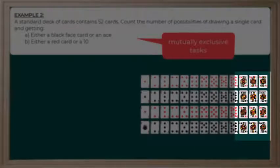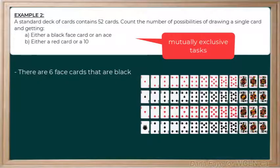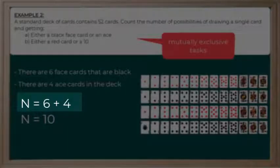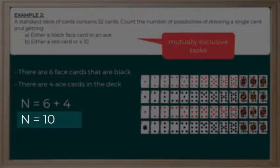Let's start by looking at the black face cards. In each suit in the deck, there are three face cards and half of the suits are black. Therefore, we can count six total black face cards. When we look at the aces, there is one ace per suit in the deck of cards, so in total there are four possibilities for aces. To find the number of possibilities, I simply add the two options together: six options for black face cards plus four possibilities for ace cards gives ten possibilities to select a black face card or an ace.